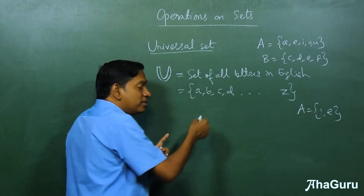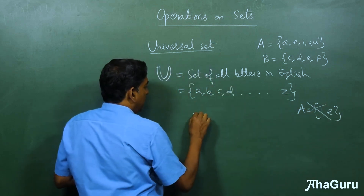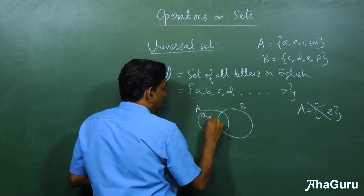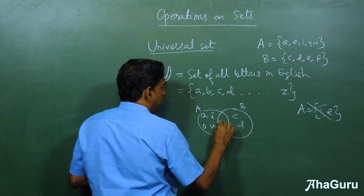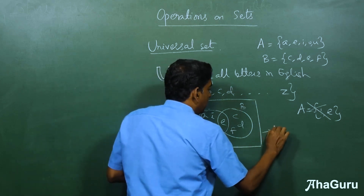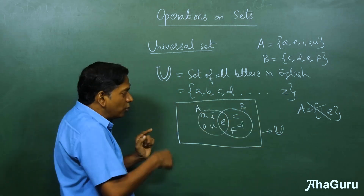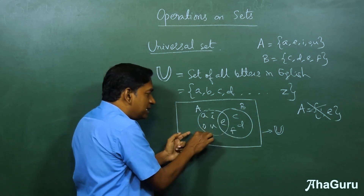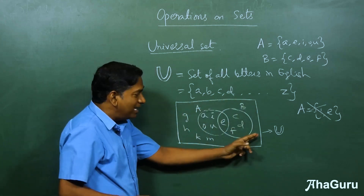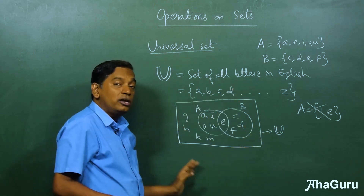The idea of a universal set can also be represented with a Venn diagram. Set A will have A, I, O, U; set B will have C, D, F; and E is common. The surrounding box represents all the letters in the alphabet — this is the universal set. Sets A and B lie inside this big box. Letters like G, H, K, M, etc. lie outside the circles but inside the box. As long as you know what the universal set is, you can find what lies outside the individual sets but is still part of the universal set.